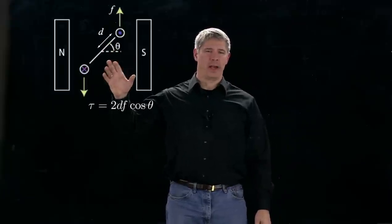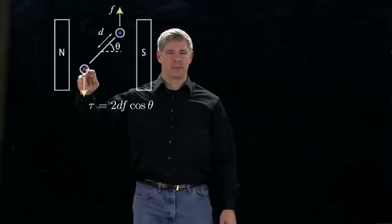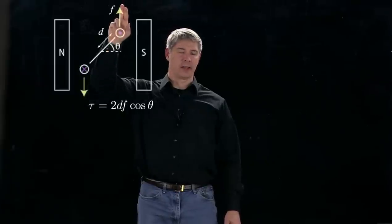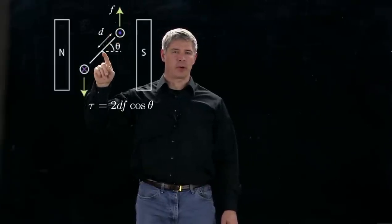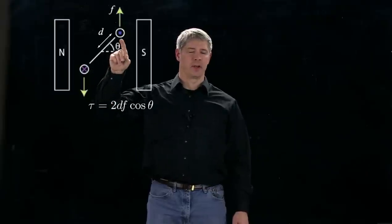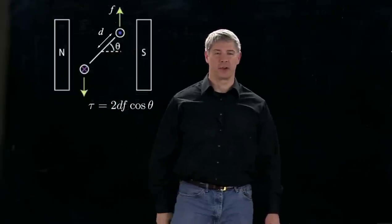Here's our loop of wire passing through the magnetic field from the previous video. This end of the loop has a force acting down on it, this end has a force acting up on it. Therefore, the torque about the center point here is two times the distance from the center point to the conductors times the force on the conductors times cosine of theta.